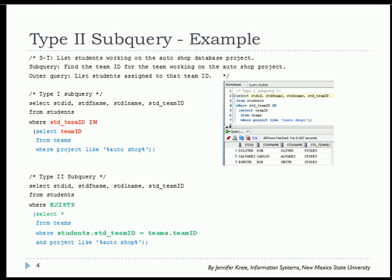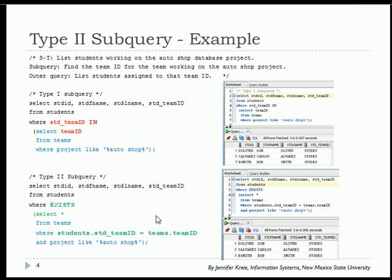The type 2 version would look like this. We're doing a select asterisk. It doesn't really matter what column we put in the select clause, it's not directly used by the outer query. We're looking at from teams and where we are joining the outer table students dot student underscore team ID with the inner table teams dot team ID. When we run that query, we'll get the same output, but using the type 2 approach.